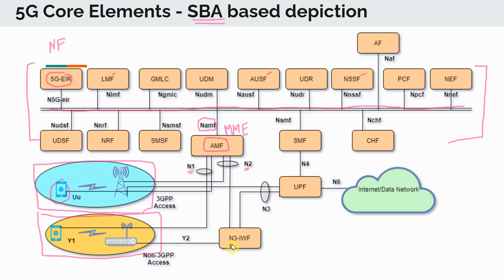And then there is a new network function. Again, recall I'm using the word network function, not a network element. Something which is referred to as N3IWF, which stands for non-3GPP interworking function. And this is the gateway into the 5G core. So we have two ways of accessing the 5G core. You obviously have the 3GPP access, and then you have the non-3GPP access.